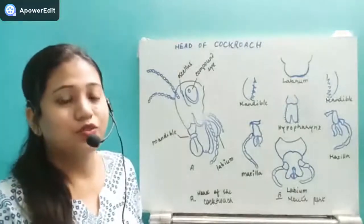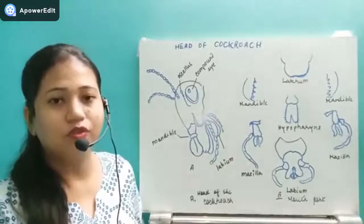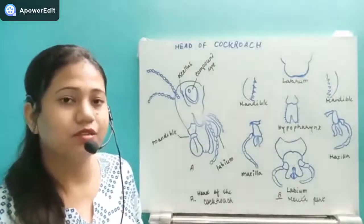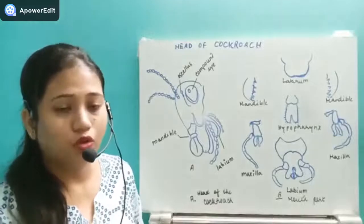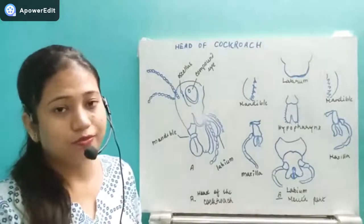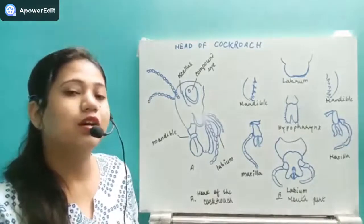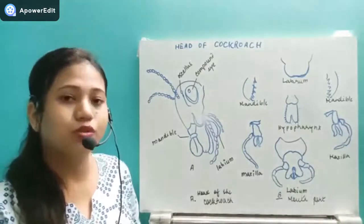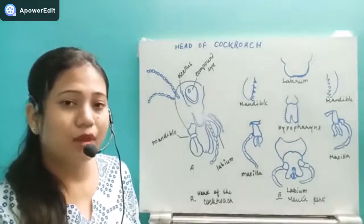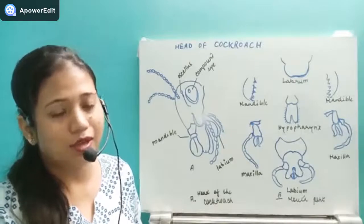Hello students. Today we are going to start the test of the morphology of cockroach. We have already discussed the first part of cockroach morphology, where we studied that the cockroach body is divided into three parts: the mouth, the thorax, and the abdomen.